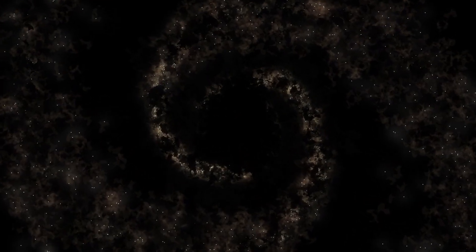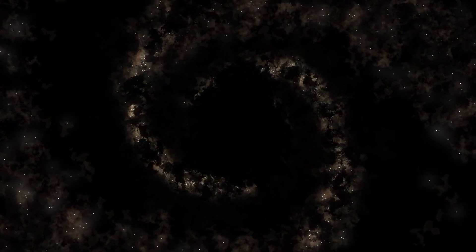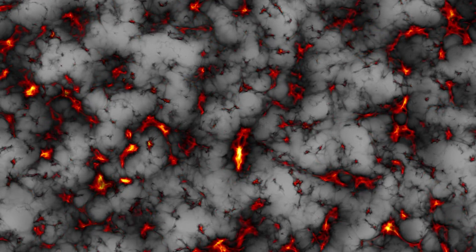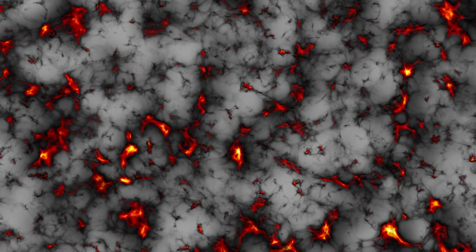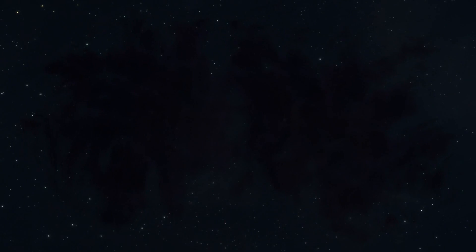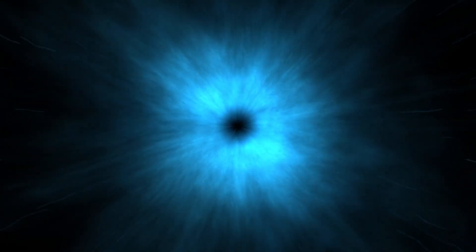The study of Abel 3667 also sheds light on the properties of dark matter. While dark matter does not interact with light, it exerts gravitational forces that affect the motion of galaxies and the behavior of hot gas in the cluster. By analyzing the distribution and dynamics of galaxies and gas in Abel 3667, astronomers can infer the presence and distribution of dark matter. This helps to build a more comprehensive picture of how dark matter influences the formation and evolution of large scale structures in the universe.